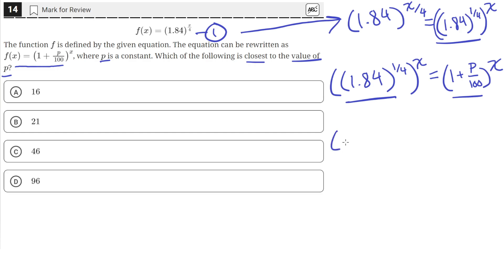So we just need to solve this equation: 1.84 raised to the 1 fourth equals 1 plus p over 100, to solve for the value of p. Let's find the value of this in our calculator.